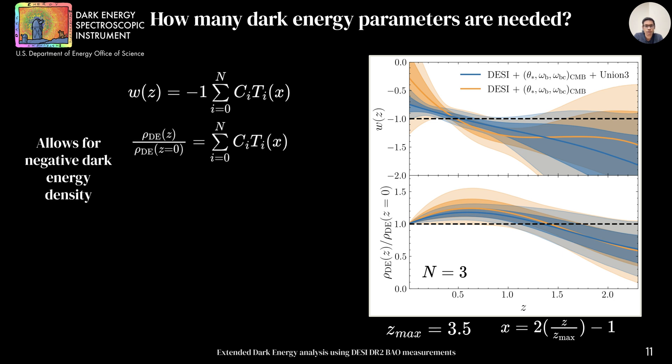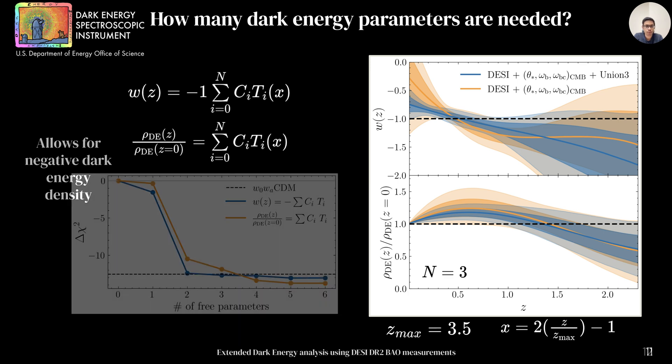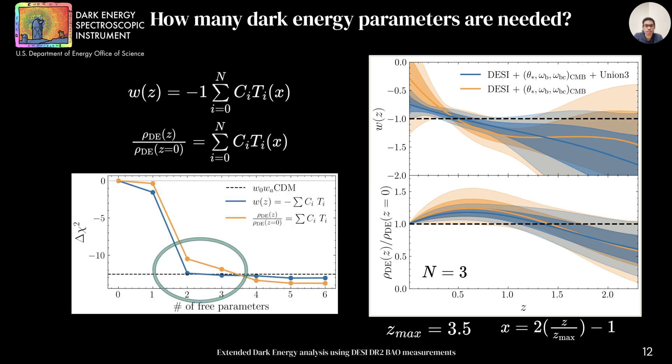In addition to this, we also explore giving similar freedom to dark energy density, which even allows for negative values and follows the similar trend. We can repeat this exercise for different values of n, and we find that fit to the data saturates around 2 for w of z and 3 for dark energy density.